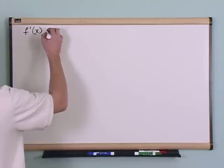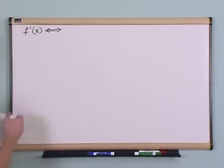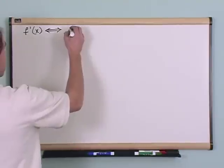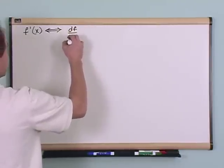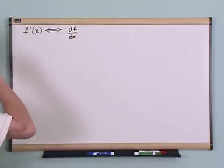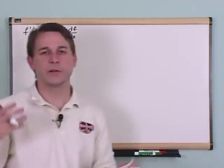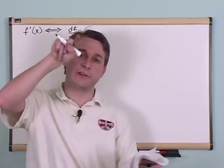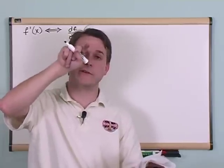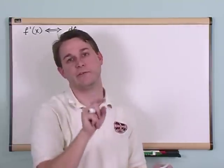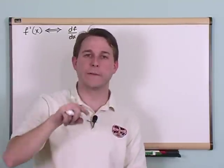You can write it that way, or you can write it as we said in the last section as simply df dx. Now this means I'm taking the derivative of the function f with respect to the function x. It just means I'm looking at how f changes at a point, with respect to how x changes.